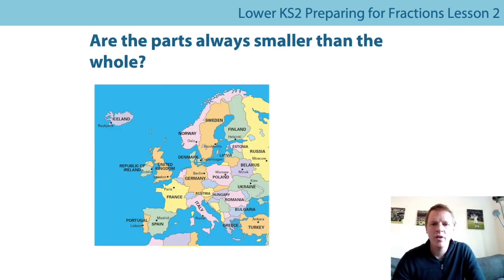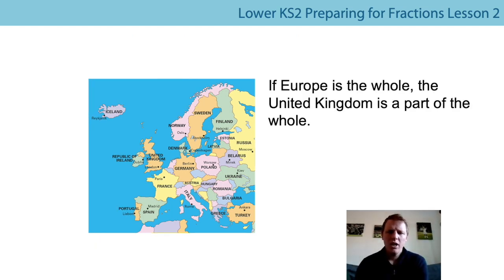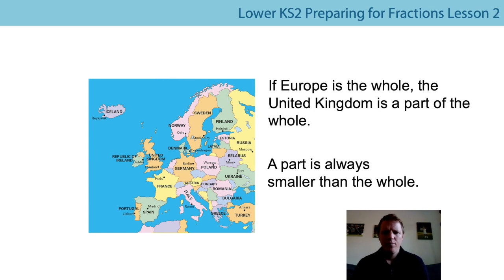Are the parts always smaller than the whole? For this example of the map of Europe — we said there are lots of different parts. I can see Spain, France, Italy. Are they all smaller than the whole, which is Europe? We've got Europe as a whole and the United Kingdom shown in orange as a part of the whole. Is the whole larger than the parts? Yes — a part is always smaller than the whole.